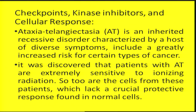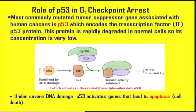In ataxia telangiectasia, a disorder characterized by a great increase in the risk for certain types of cancer, patients are extremely sensitive to ionizing radiation. Cells from these patients lack a crucial protective response normally found in normal cells, and because they cannot be arrested at a particular stage, these cells move with damaged DNA and become cancerous. Once you cannot stop a cell at a particular stage with damage, it is going to become a cancerous cell.